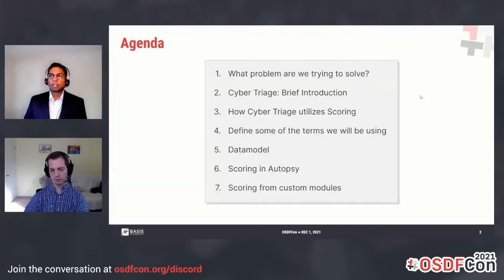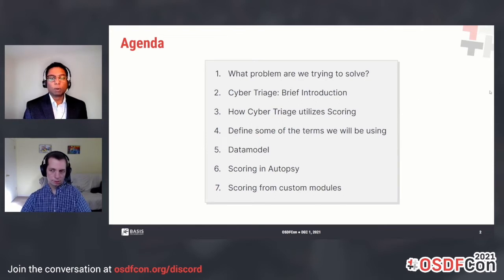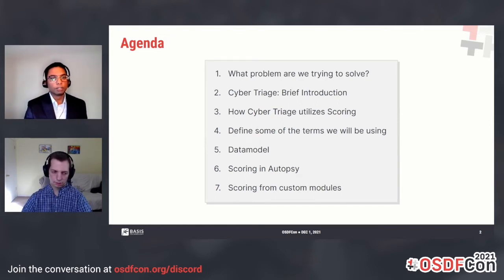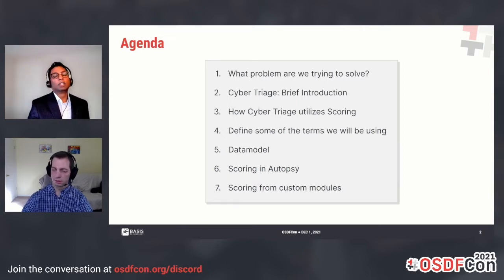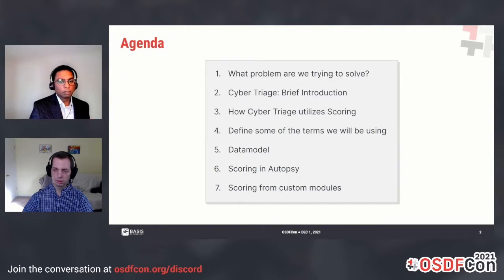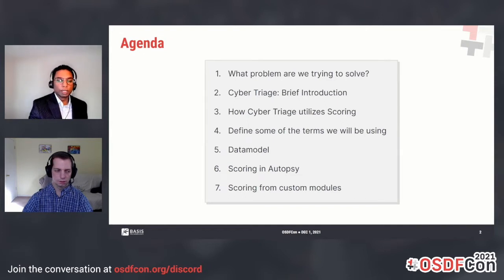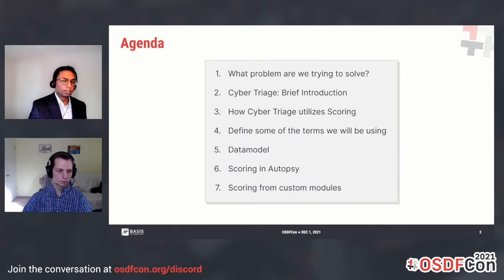Our high-level agenda: we'll be talking about what problem we are trying to solve, then a brief introduction to Cyber Triage and how it utilizes scoring. If you have questions about Cyber Triage specifically, please feel free to get in touch with us. We'll also talk about some of the terms we're using — what is an analysis result, for example — and we'll discuss the data model changes and how scoring is incorporated in Autopsy, and then how you can utilize scoring when you write your own custom modules.